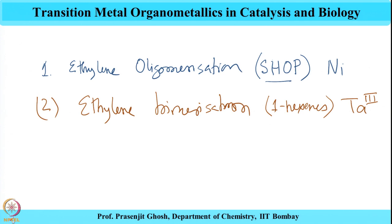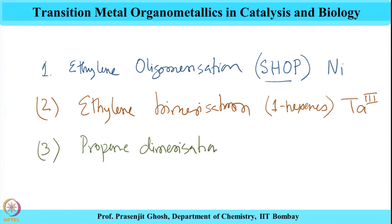Subsequently, we also discussed the dimerization of propene. Propene dimerization produces hexenes of different substitutions, and these branched hexenes when hydrogenated give a high-quality petrol with very high anti-knocking attributes. This process also uses a nickel catalyst for carrying out such transformations.